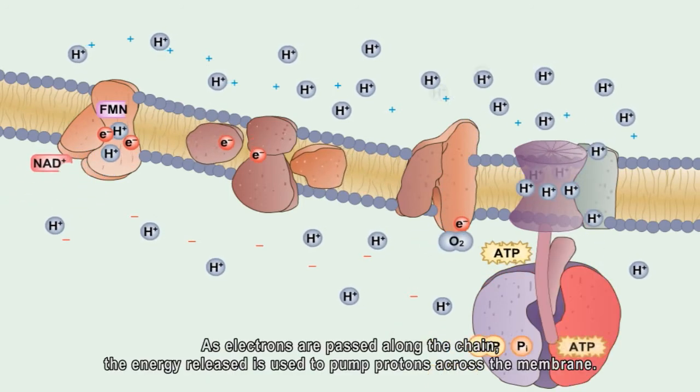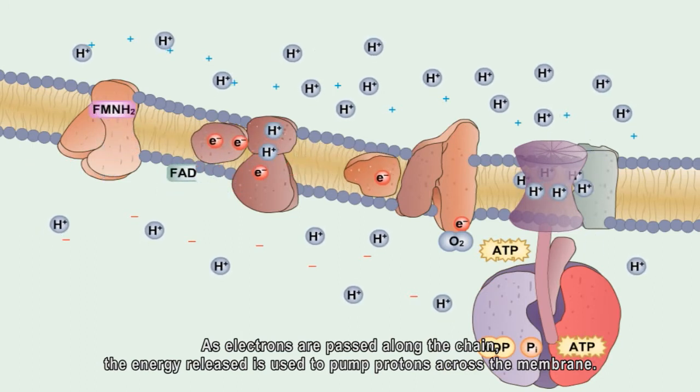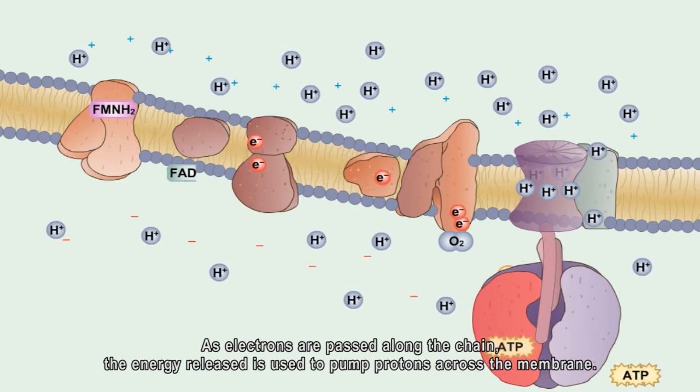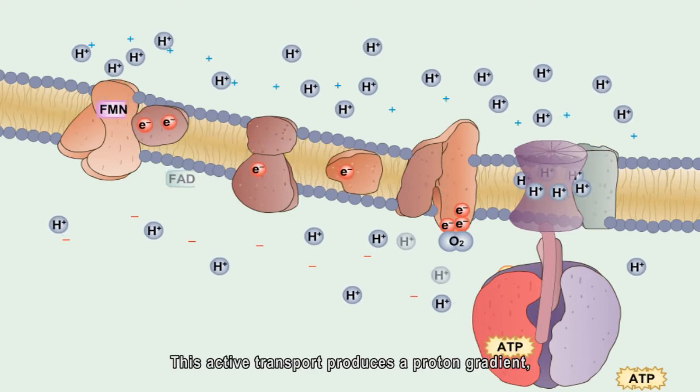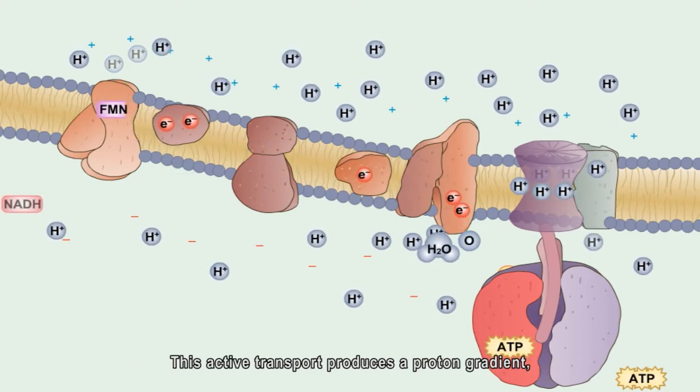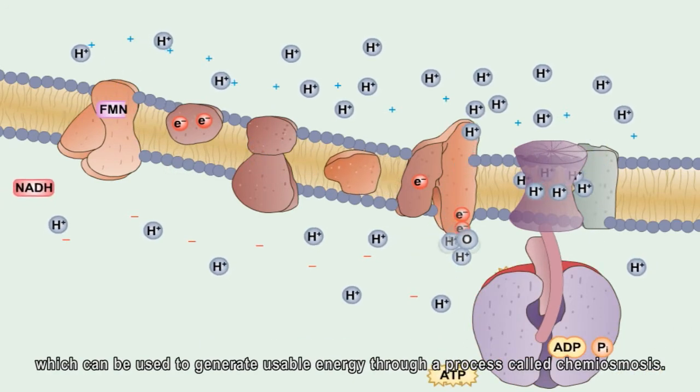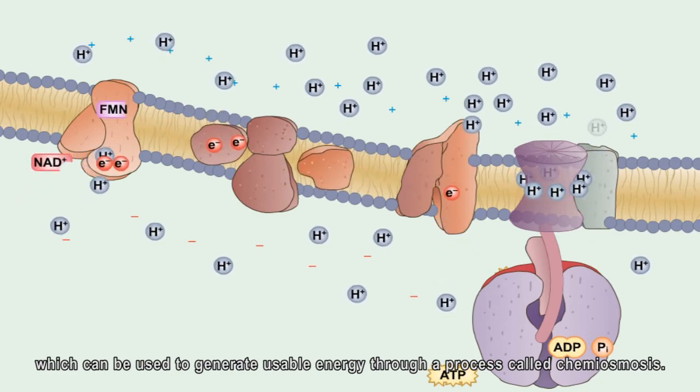As electrons are passed along the chain, the energy released is used to pump protons across the membrane. This active transport produces a proton gradient which can be used to generate usable energy through a process called chemiosmosis.